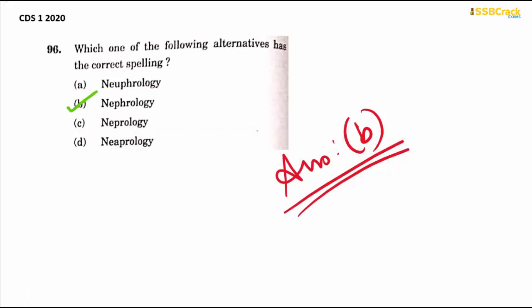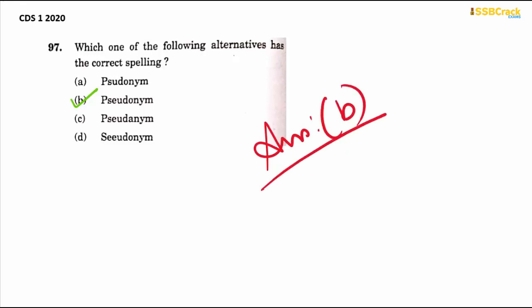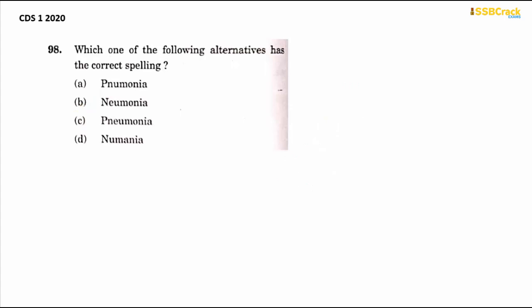The next word is 'pseudonym' — P-S-E-U-D-O-N-Y-M. Again, P is silent but it is spelled with a P at the beginning. The answer is option B. A pseudonym is a pen name which an author takes up when writing a novel, short stories, or poetry.